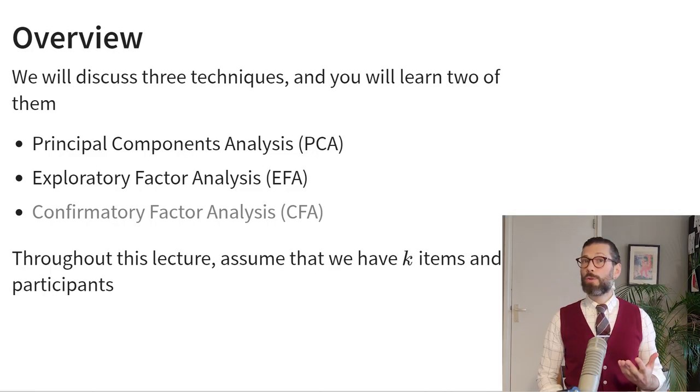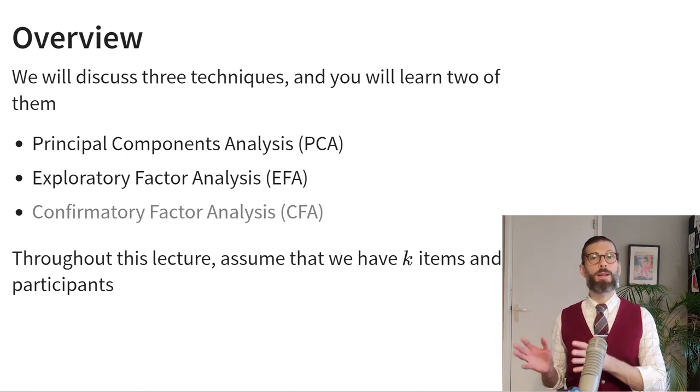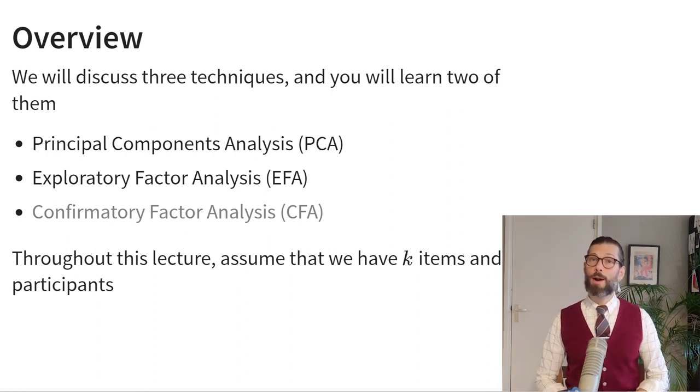Remember that last week we discussed the core purpose of psychometrics, which is to measure an underlying latent construct using multiple observed indicators. Very simply put, if we have a data set with multiple variables each measuring the same thing, how do we put them together? To do so we essentially have three techniques at our disposal. I will introduce all three of them today but go in depth on only two of them. The third technique is more specialized and requires a separate course.